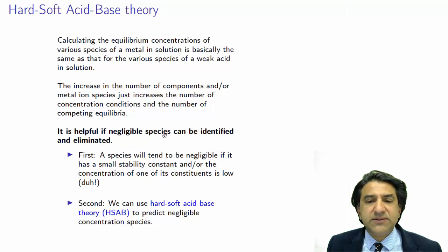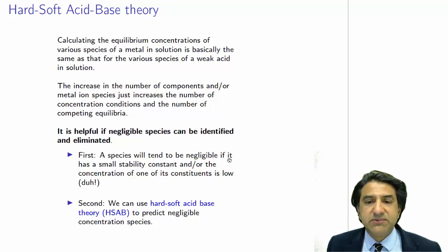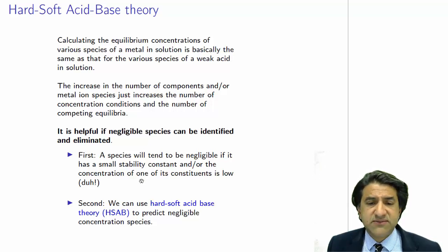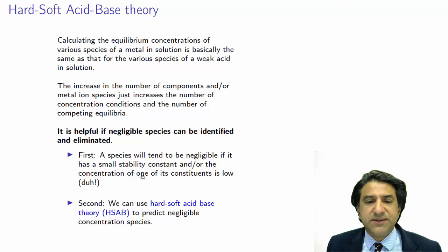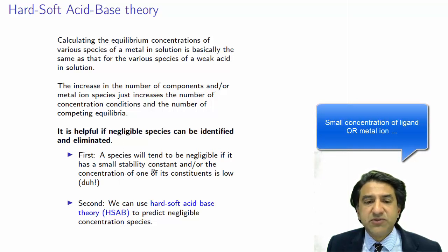It's really helpful if the negligible species — the ones that don't dissociate very much — can be identified and eliminated, at least in your thinking in the first stage. There are two basic rules. First, a species will tend to be negligible in concentration if it has a small stability constant — if there's a small beta constant, it's not going to form. Second, if there's not much of the ligand initially, the complex will also be negligible. So that covers a small stability constant and a small concentration of ligand.